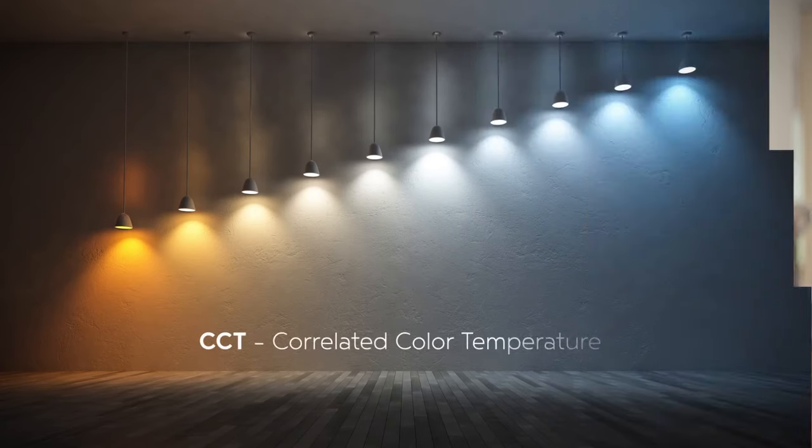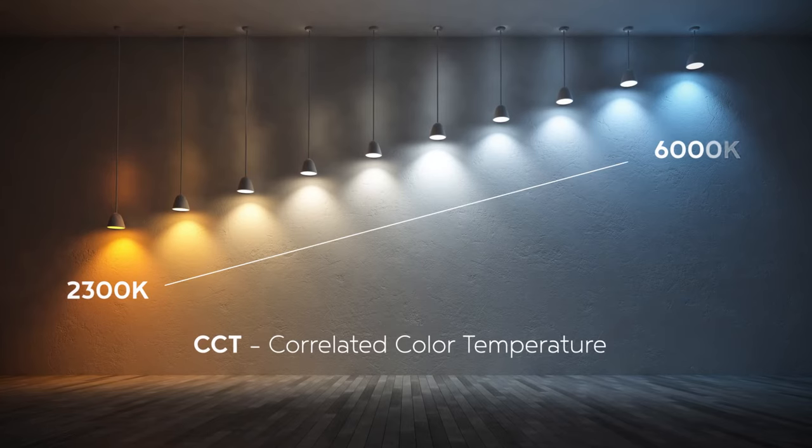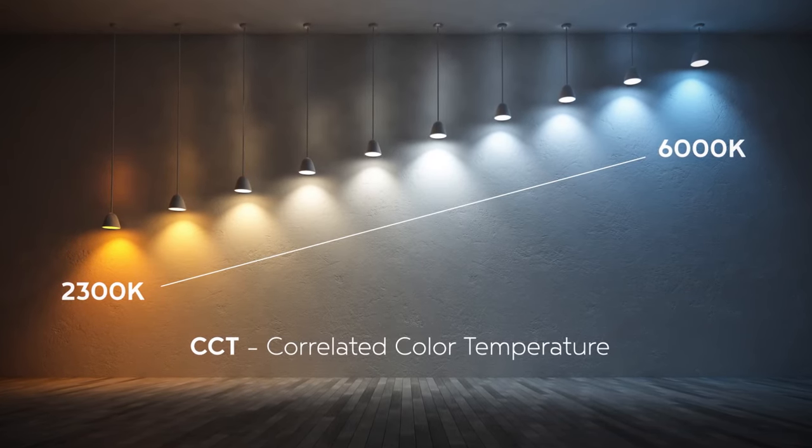In fact, you may have noticed this before — you just didn't know exactly how to describe it. CCT is a measure of units called Kelvin, or K, and ranges from 2300K to 6000K. The lower the CCT is in Kelvins, the more warm and yellow the light is going to appear. As you move up the Kelvin scale, you'll notice that light becomes more cool and blue in appearance.